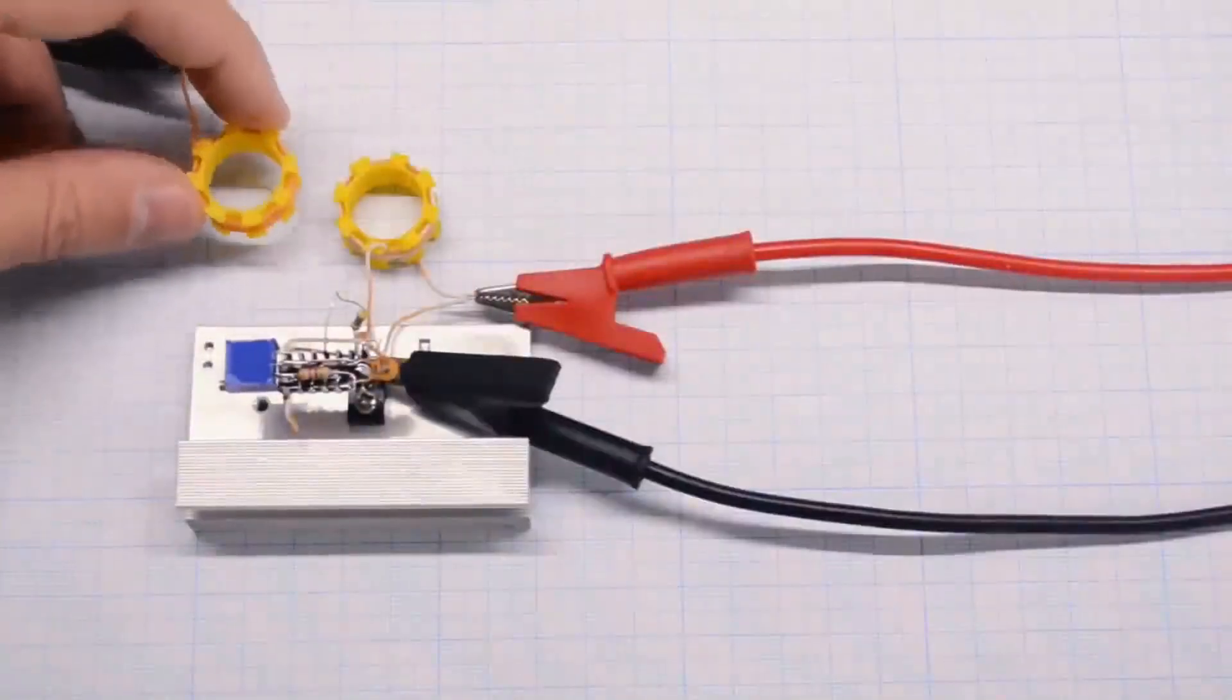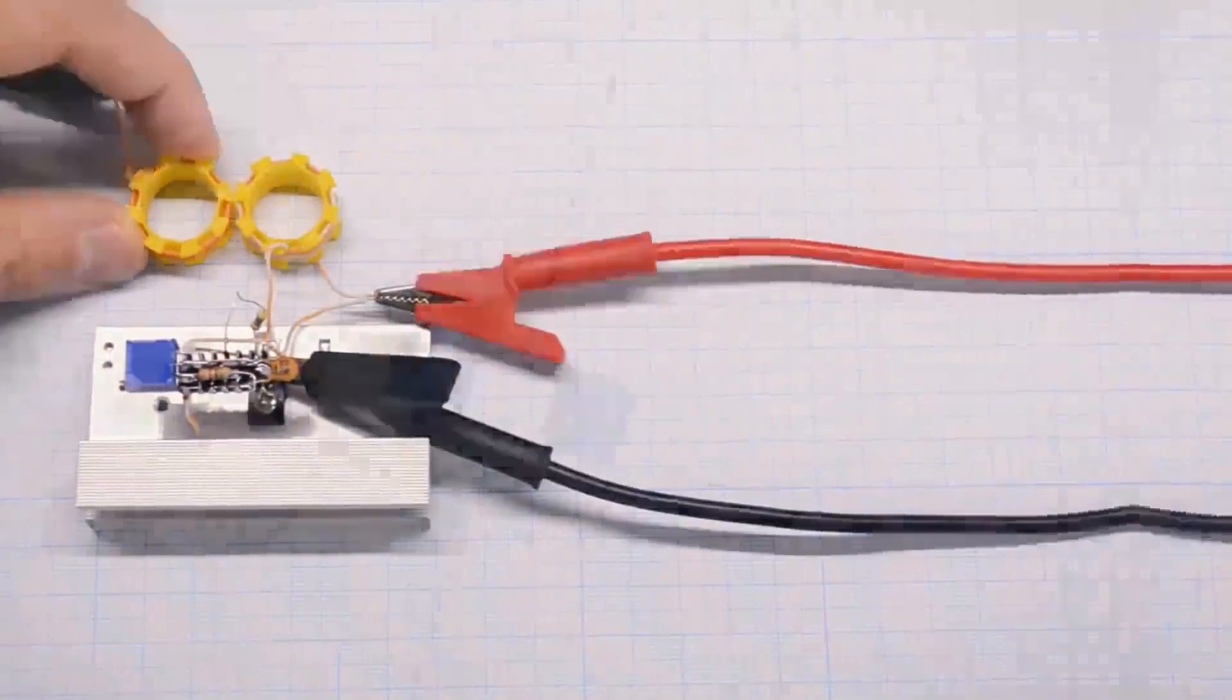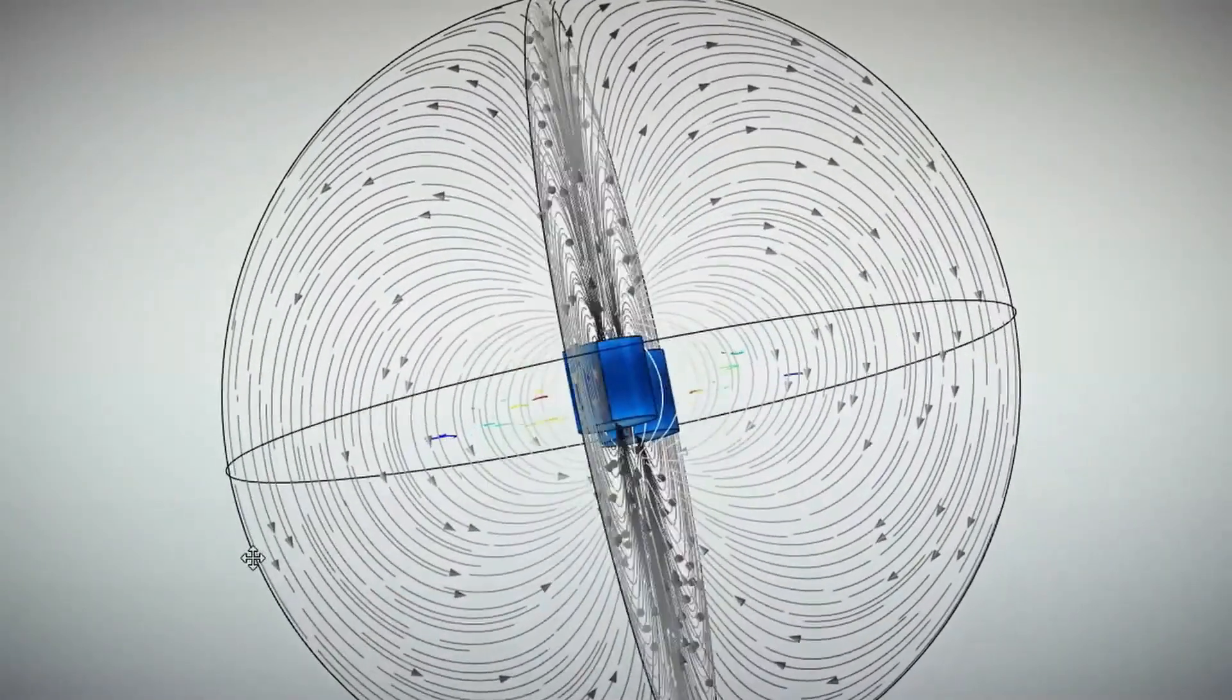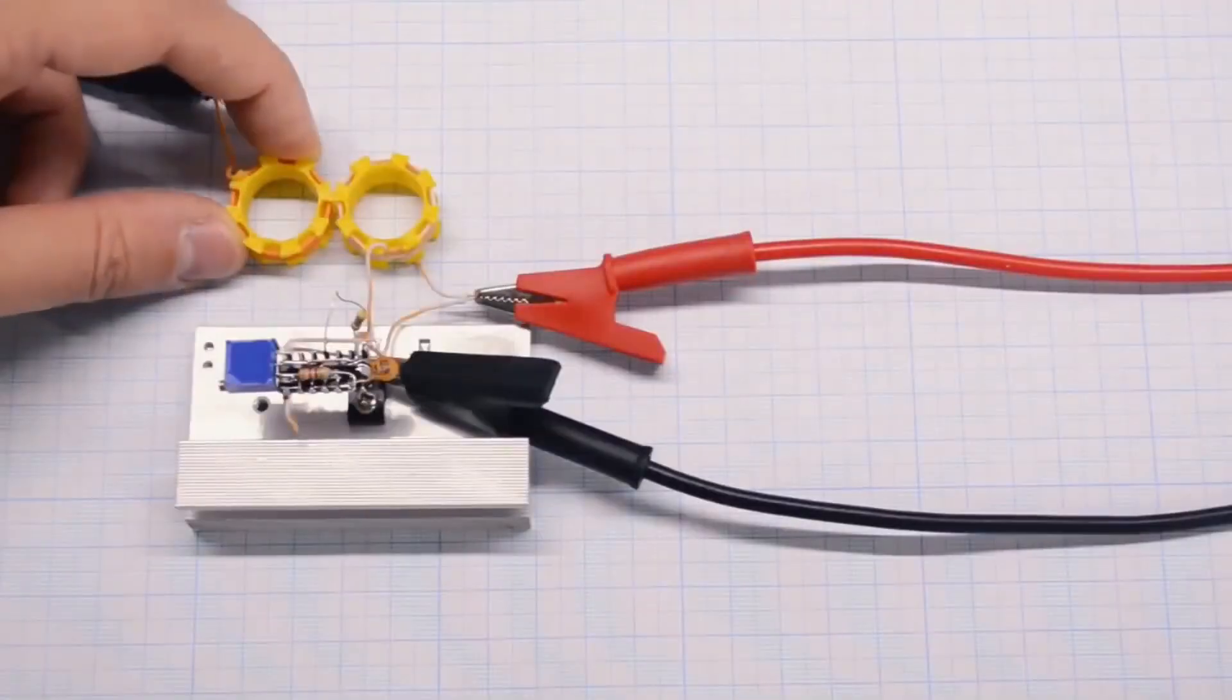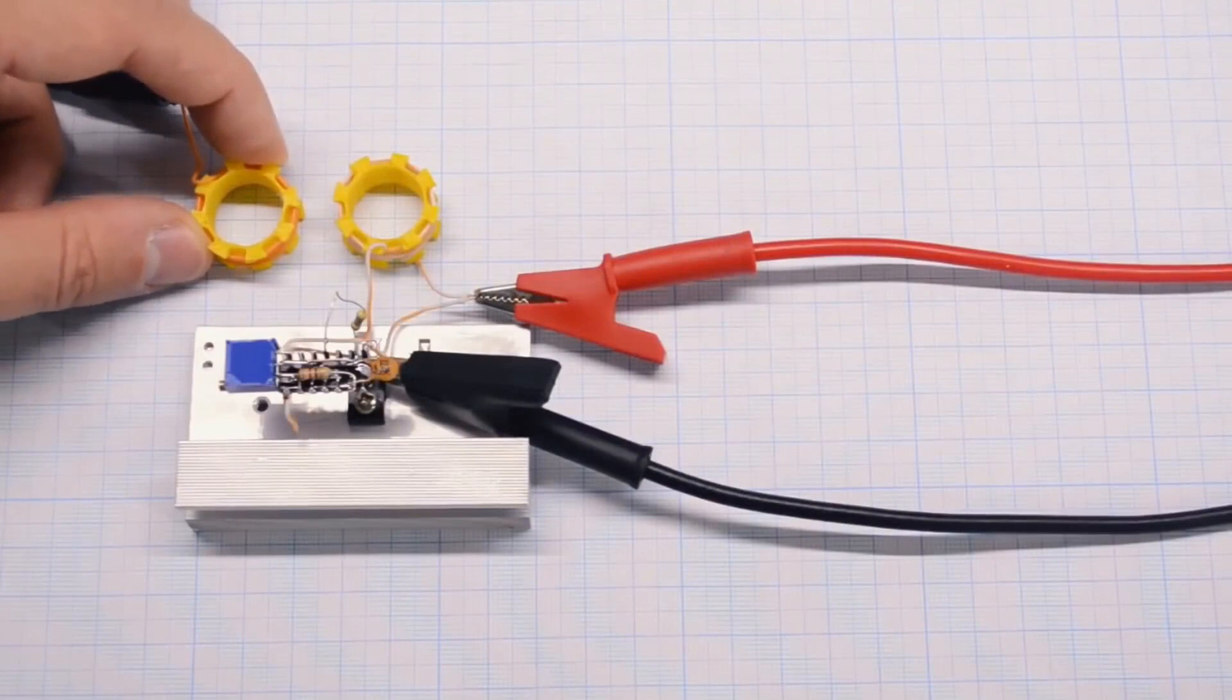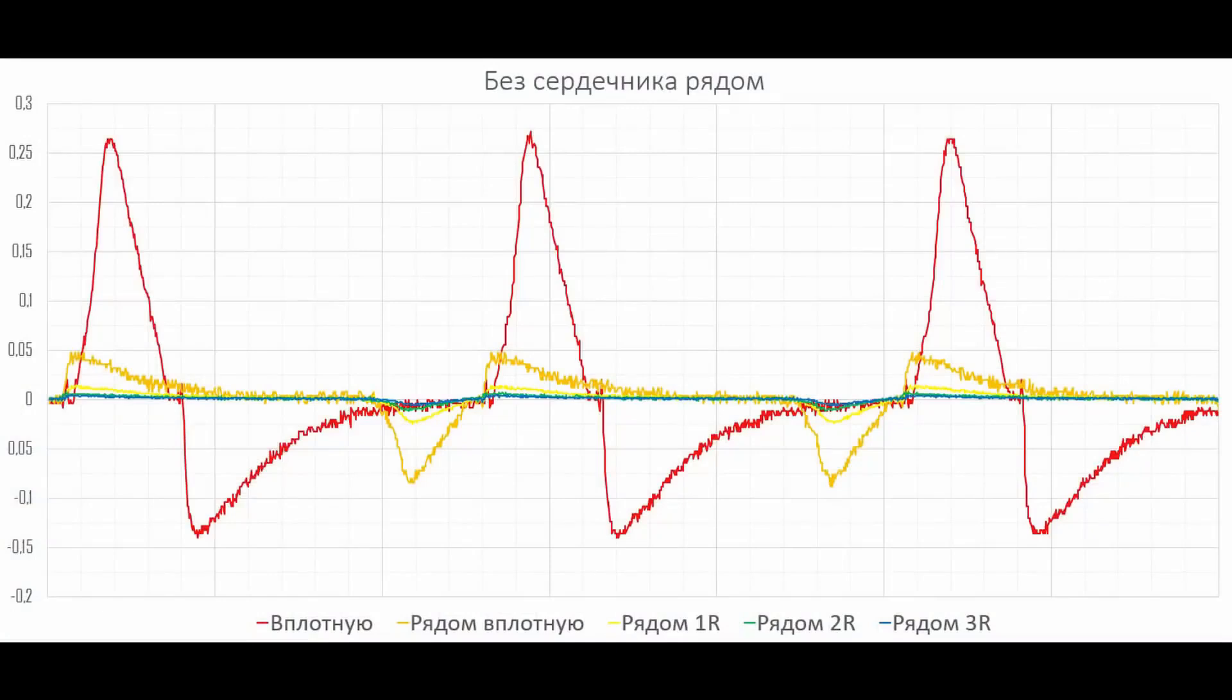Now, let's rotate the coils into the same plane. Let's conditionally call this position side by side. It can be seen that the field of one coil conflicts with the field of the other. That is, a strong interaction occurs. Now let's try moving the coil by one, two, and three radii, recording the values. The following graphs were obtained. The red one represents the induced voltage when one coil was placed on top of the other. Next, according to the colors of the rainbow, orange represents side by side closely. Yellow is side by side at a distance of one coil radius. Green is two radii, and blue is three radii.